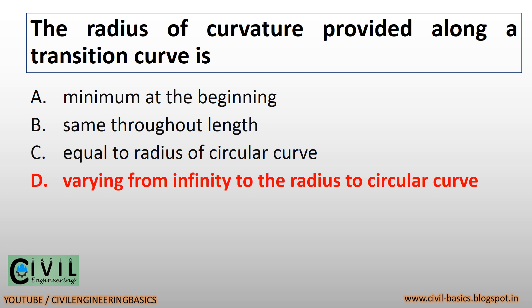The radius of curvature provided along a transition curve is varying from infinity to the radius of the circular curve.